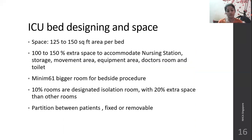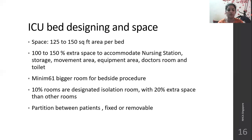For ICU space, it should be 125 to 150 square feet per bed, especially in level 3 hospitals. An additional 100 to 150 percent extra space should be there to accommodate the nursing station, storage, movement area, equipment area, doctor's room, toilet, etc. Minimum one larger room for bedside procedures should be provided. Ten percent of the rooms are designated isolation rooms with 20 percent extra space than the other rooms.